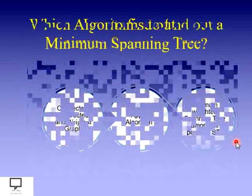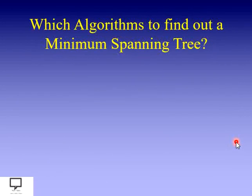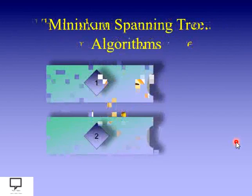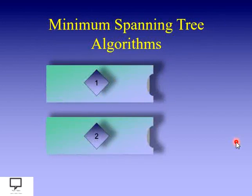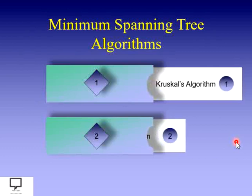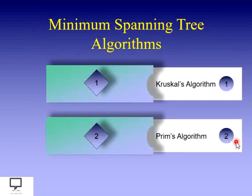Which different algorithms are we going to study? The algorithms helpful to find a minimum spanning tree are: the first algorithm is Kruskal's algorithm, and the second algorithm is Prim's algorithm. Both algorithms will be studied in this video tutorial.